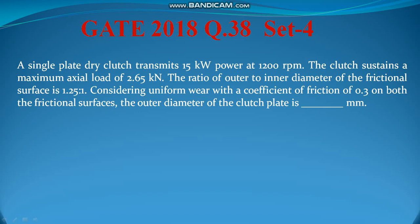The ratio of outer to inner diameter of the frictional surface is 1.25 to 1. Considering uniform wear, with a coefficient of friction of 0.3 on both frictional surfaces, the outer diameter of the clutch disc has to be calculated.